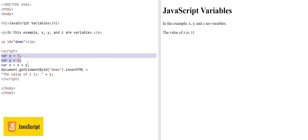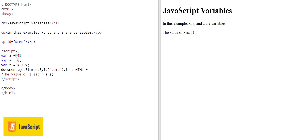We have three variables, and I'll make a small change — six plus six, so the answer in this paragraph tag should be 12. We are using document.getElementById('demo').innerHTML to output the value. Running the code again, you can see the answer has changed to 12.